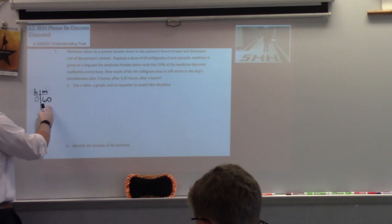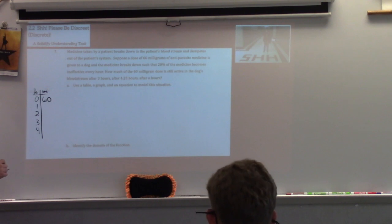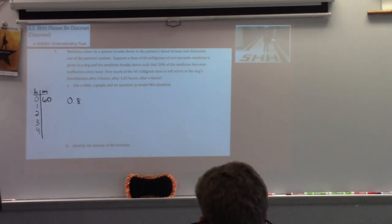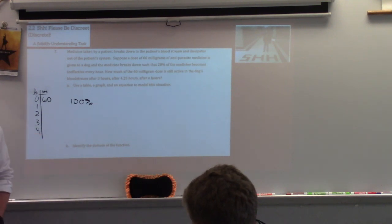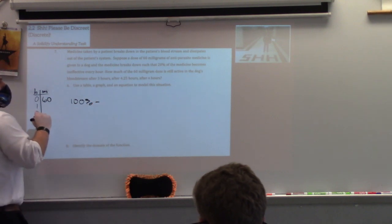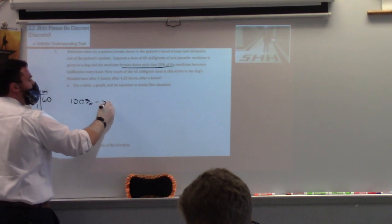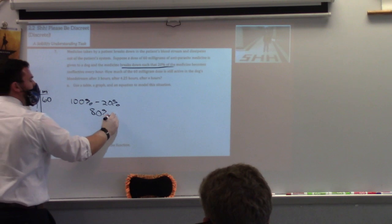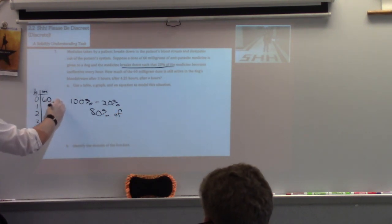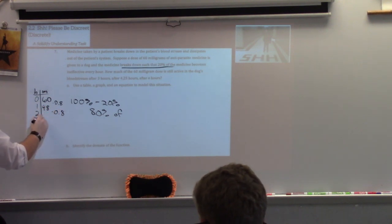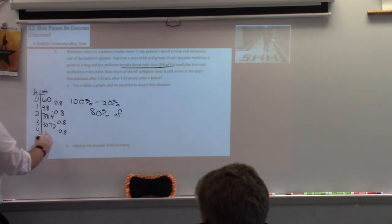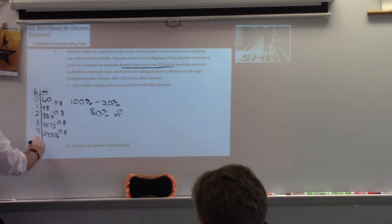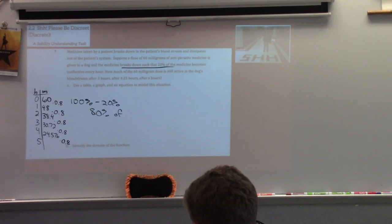What are we multiplying by each time? Where does the 0.8 come from? We're starting with 100 percent — all of it — and every hour we're losing 20 percent, so we're left with 80 percent of whatever was previous: times 0.8. That gives us 48, then 38.4, then 30.72, then 24.576, and at hour 5 it's 19.75.